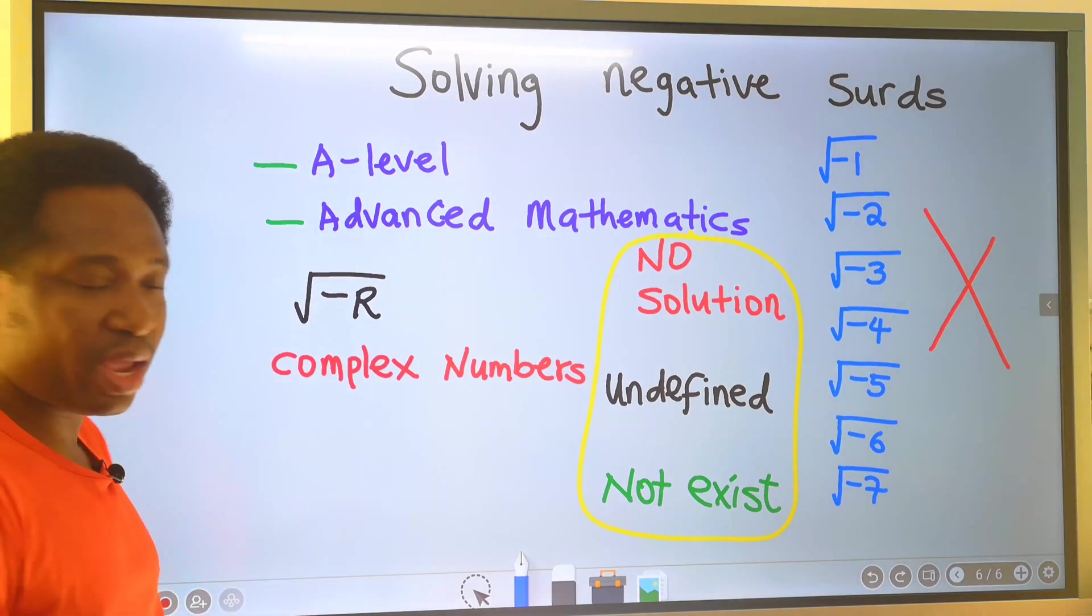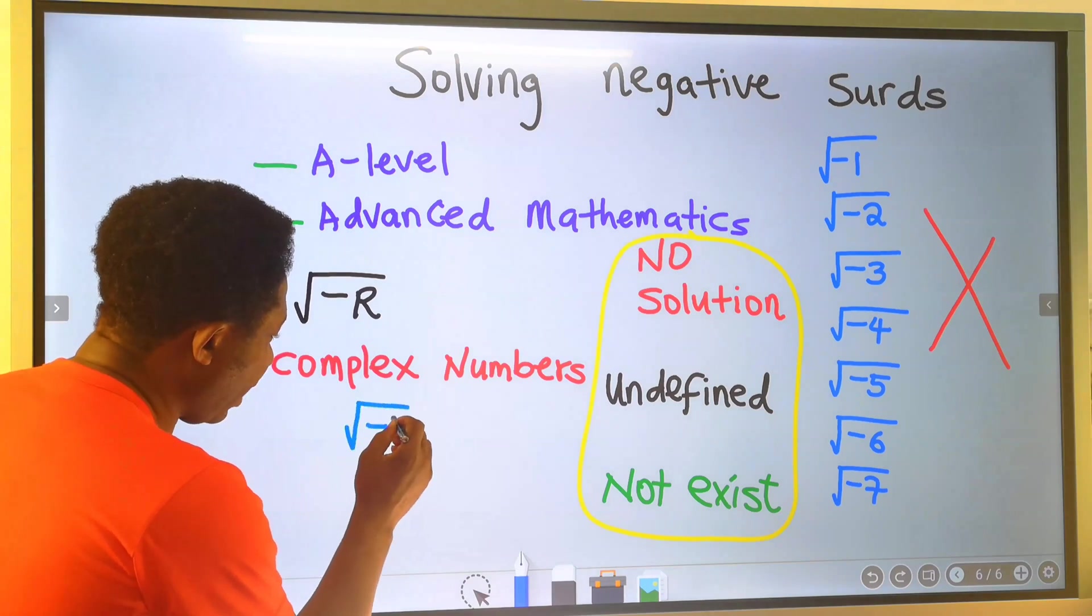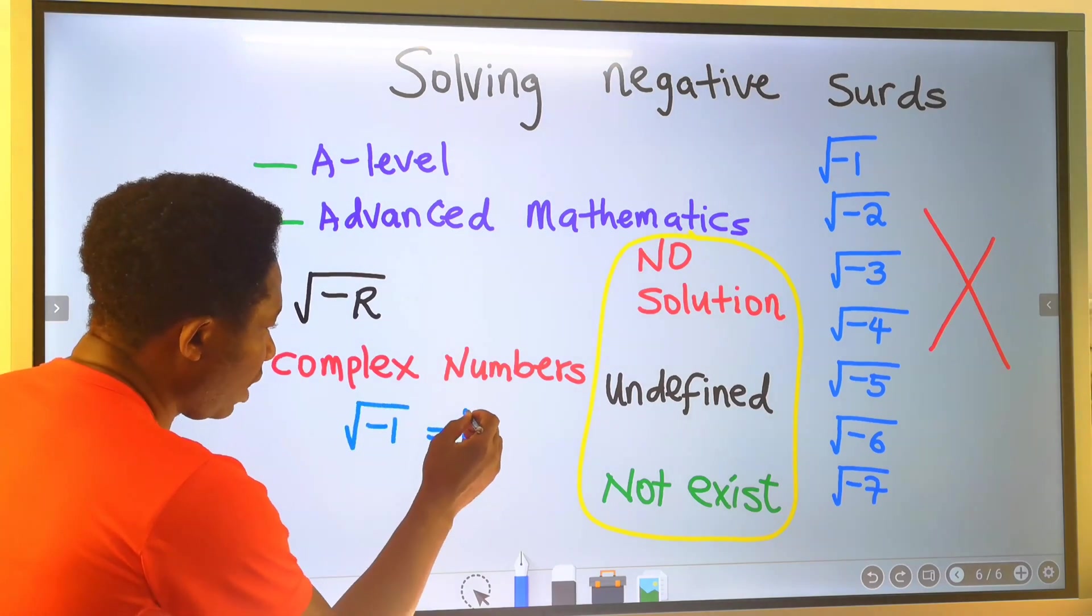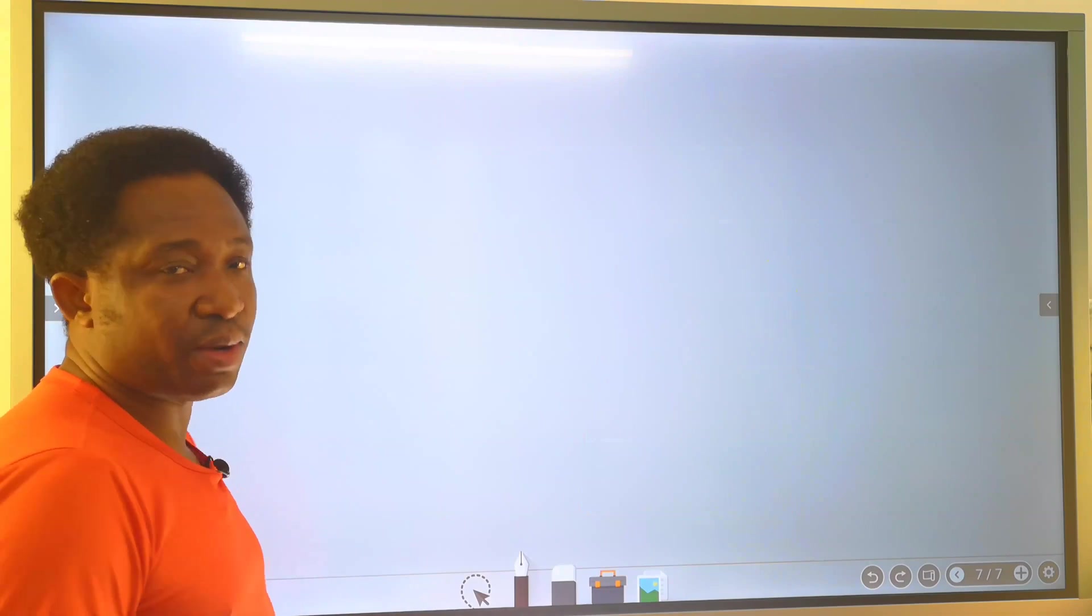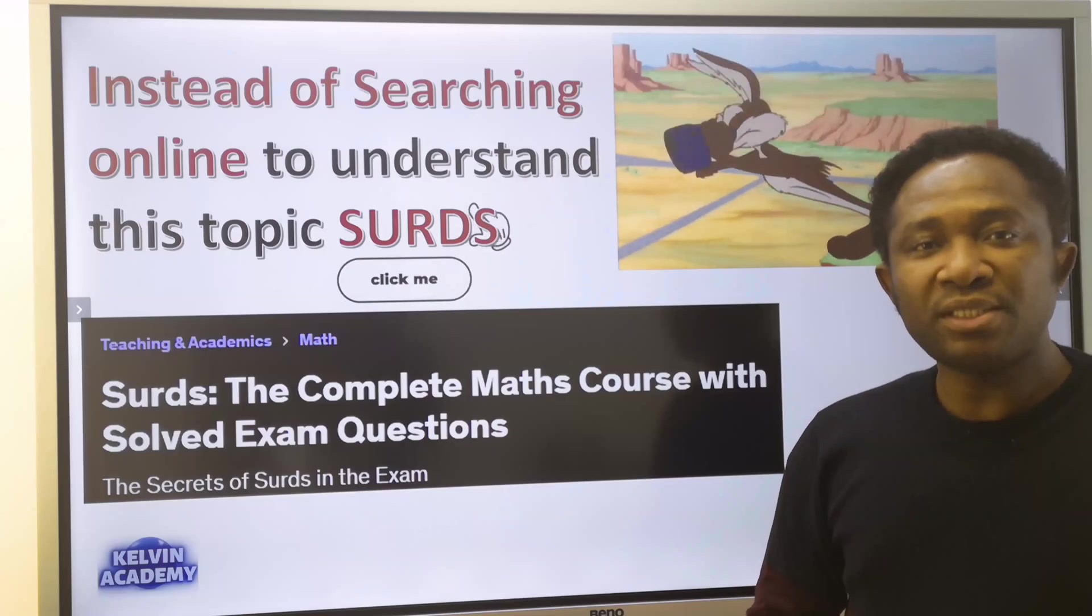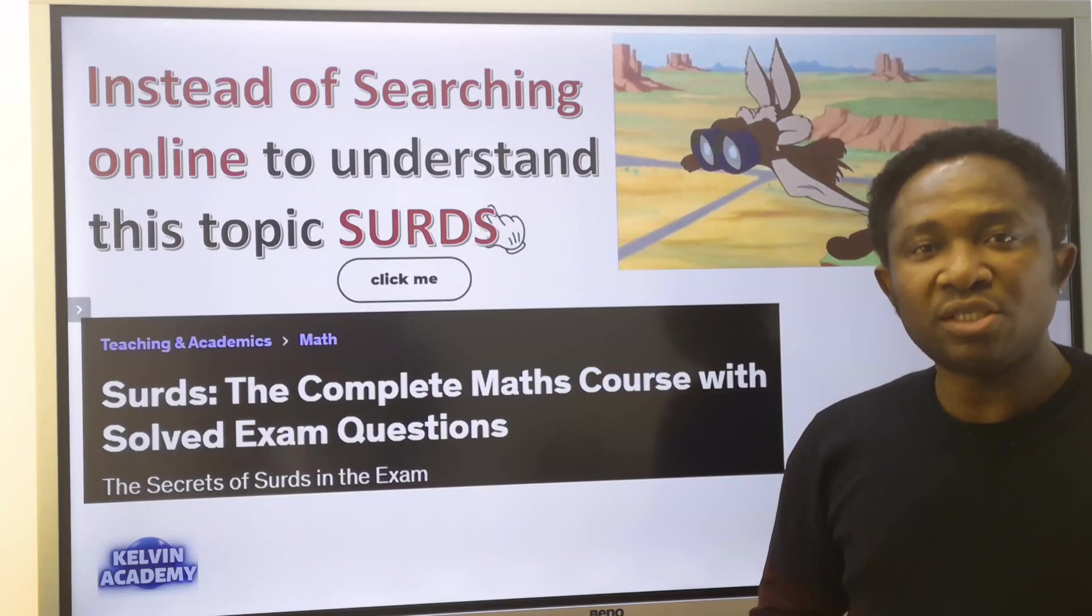Where the square root of minus one equals i. For example, for the complete video course on this subject, click the link in the description or in the pinned comment section.